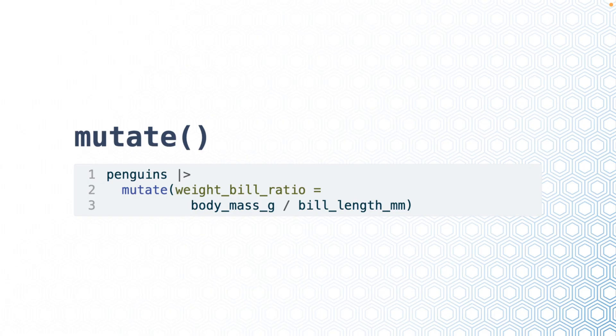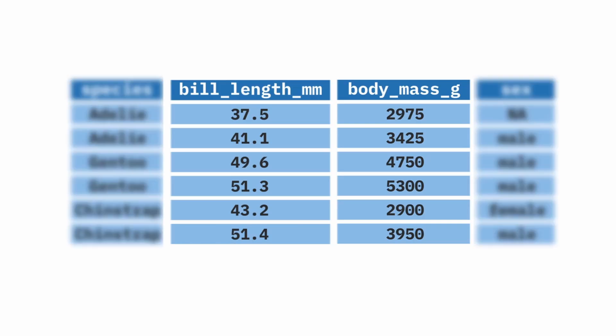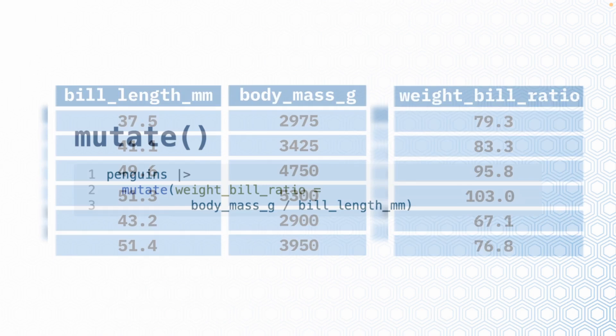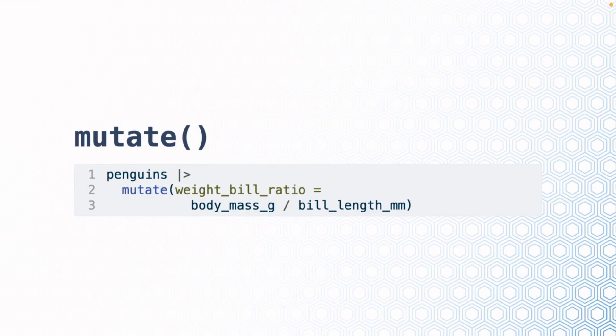The next function we'll cover is mutate. Mutate allows us to create new variables or change existing ones. In the animation, we are using mutate to create a new variable called weight_bill_ratio, which we calculate by dividing body mass in grams by the bill length. That creates a new variable that we call weight_bill_ratio.